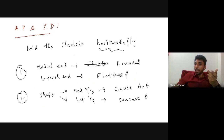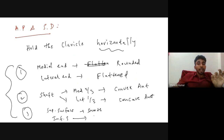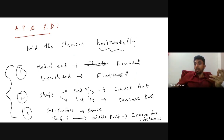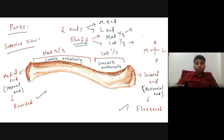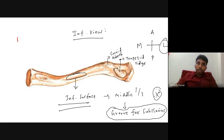The superior surface of the clavicle is smooth, while the inferior surface at the middle one-third has the depression called the groove for subclavius. Using these features, the clavicle shown in the superior and inferior view diagrams is confirmed to be the right clavicle bone.